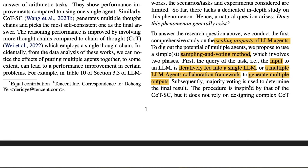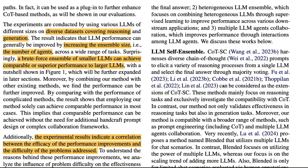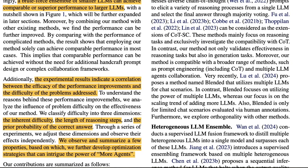You might think a model is making the final decision — it is not. They conducted several experiments across diverse datasets with diverse model ranges: different model sizes, different model types, examining this across reasoning and generation tasks. Importantly, the experiment results indicate a correlation between the performance improvements and the difficulty of the problem addressed.